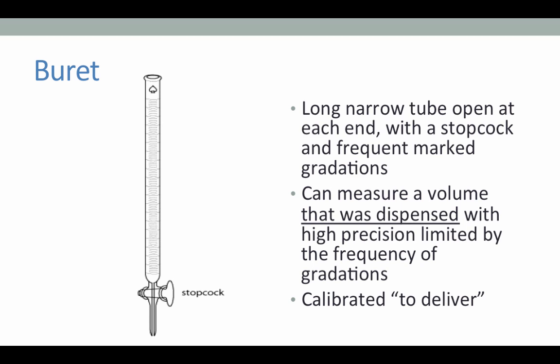The burette is another long, narrow tube of glass, however this one is open at both the top and the bottom, though the bottom entry can be blocked by the use of a stopcock. The burette is also having very many marked gradations down its length and so it can very accurately measure a volume that is dispensed. The burette is designed to dispense an amount of liquid with high accuracy. By noting the volume on the gradations of the burette before and after delivering some sample, we can take the difference of the volume measurement before and after and calculate the amount that was delivered. Therefore, it makes sense that a burette is calibrated to deliver.